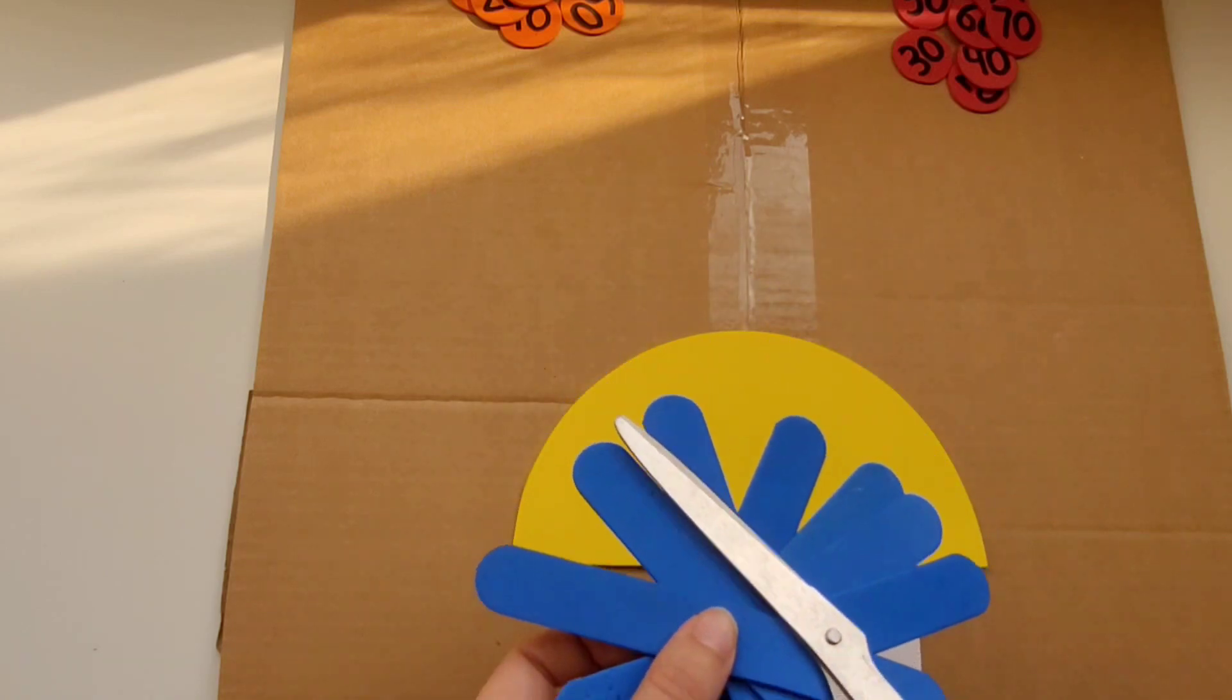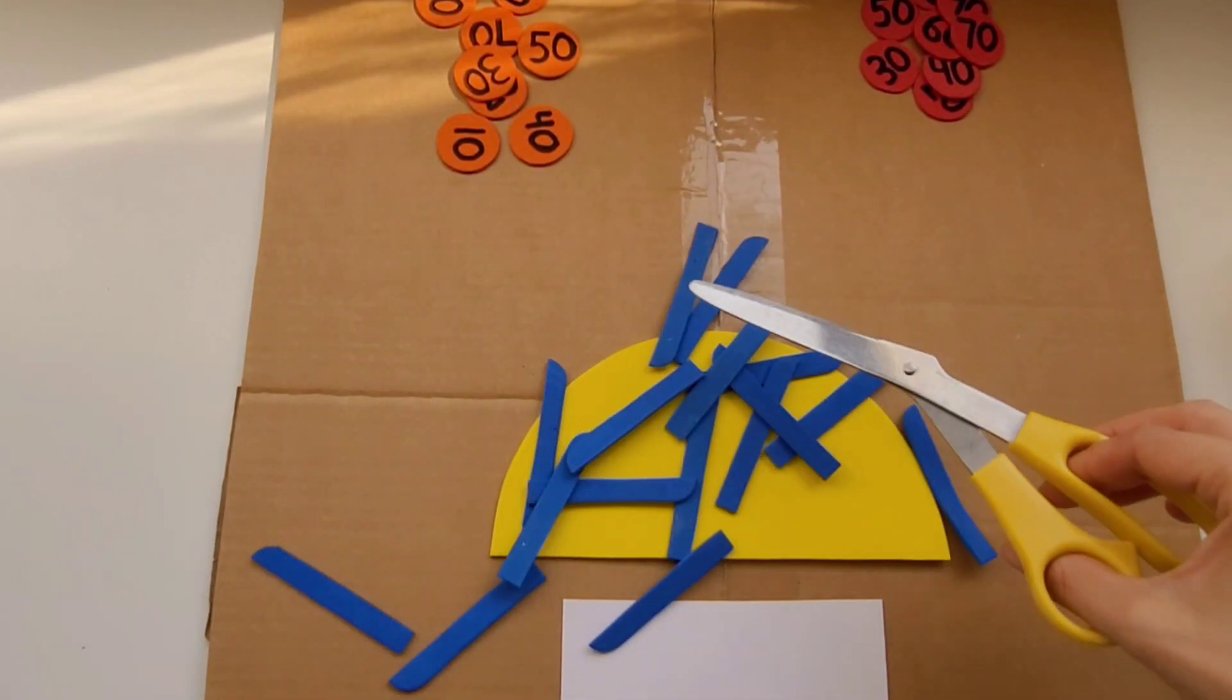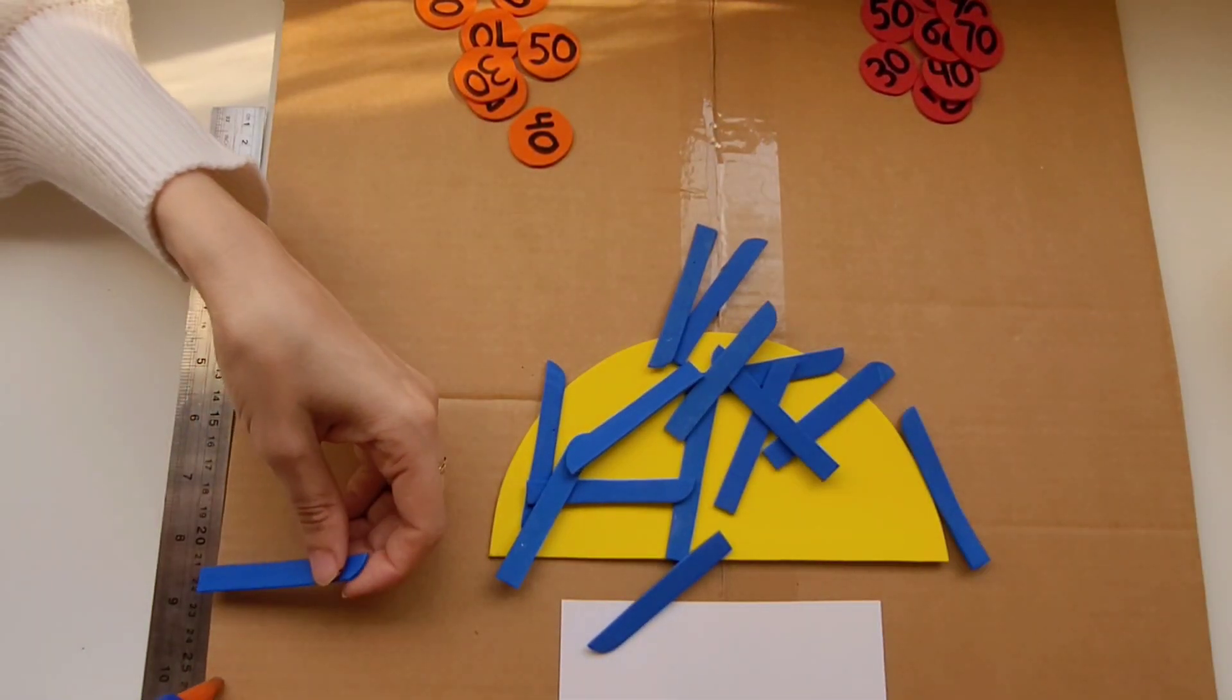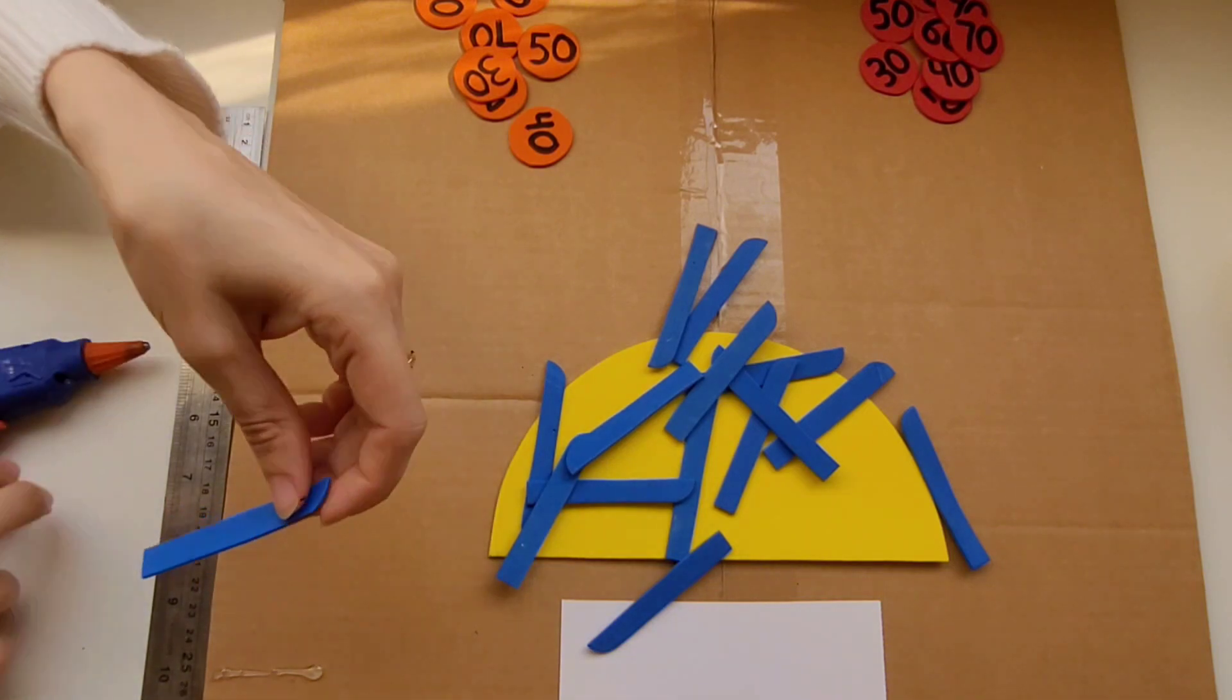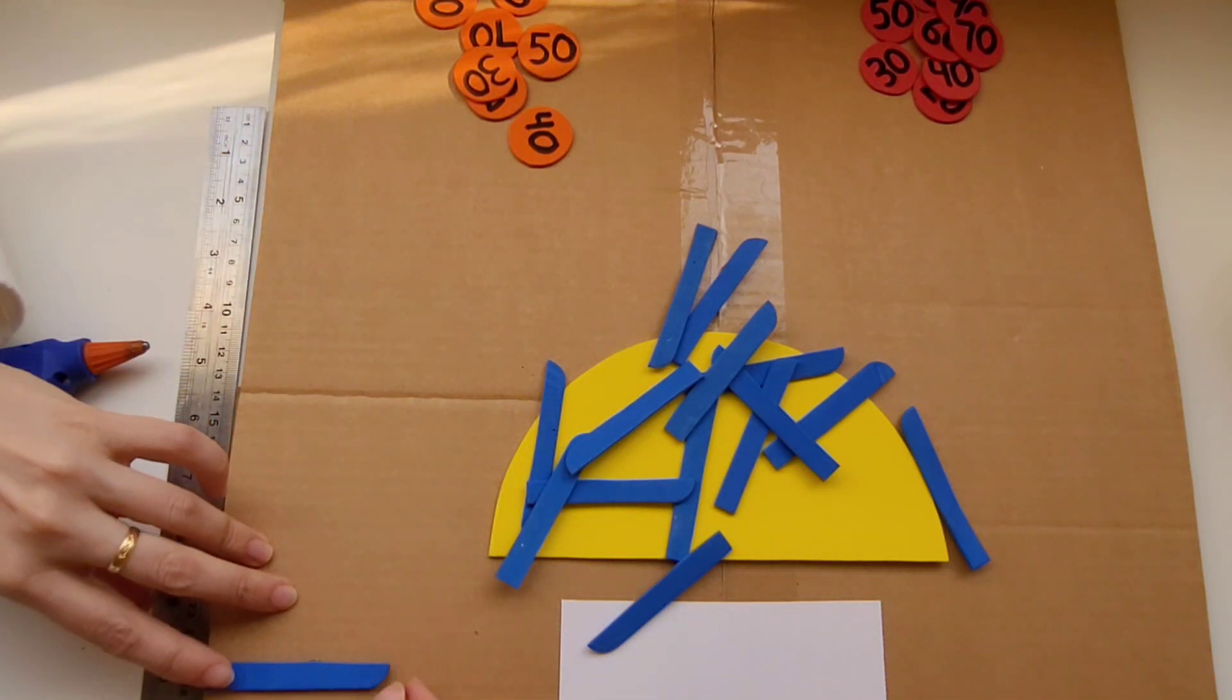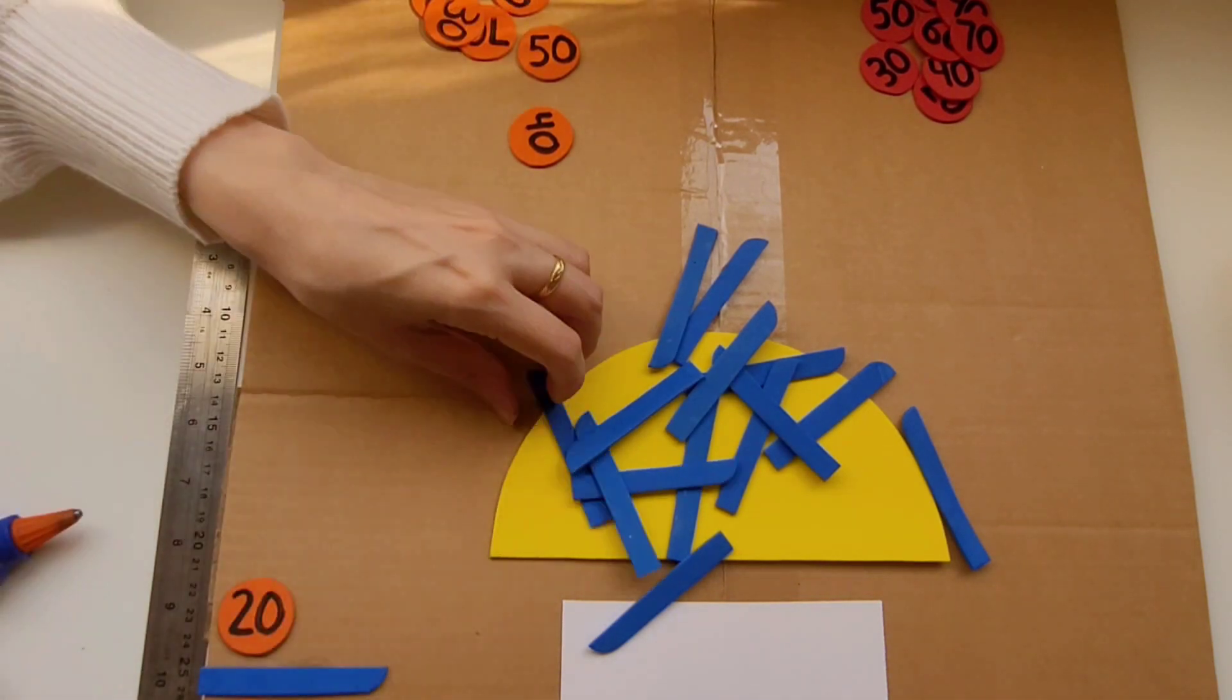Next I'm going to use these blue foam craft sticks. You can use regular craft sticks but these are just easier to cut. I'm going to glue them on the side. These are going to be like shelves that I'm going to put the numbers on.